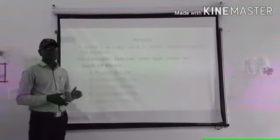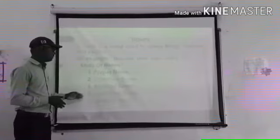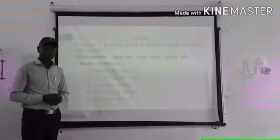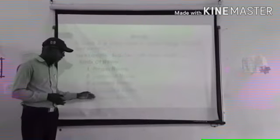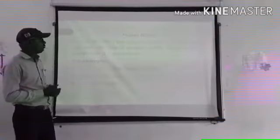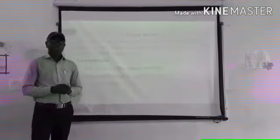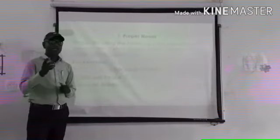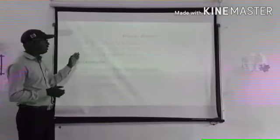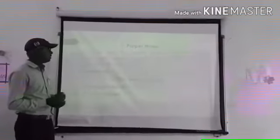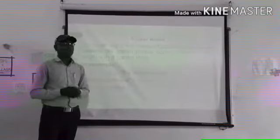So, Nouns are also divided into these kinds. Proper noun, first is a proper noun, common noun, abstract noun, collective noun and material noun. Now we see the first kind of noun that is proper noun. A proper noun, you know, the names of particular places or persons are called proper noun.